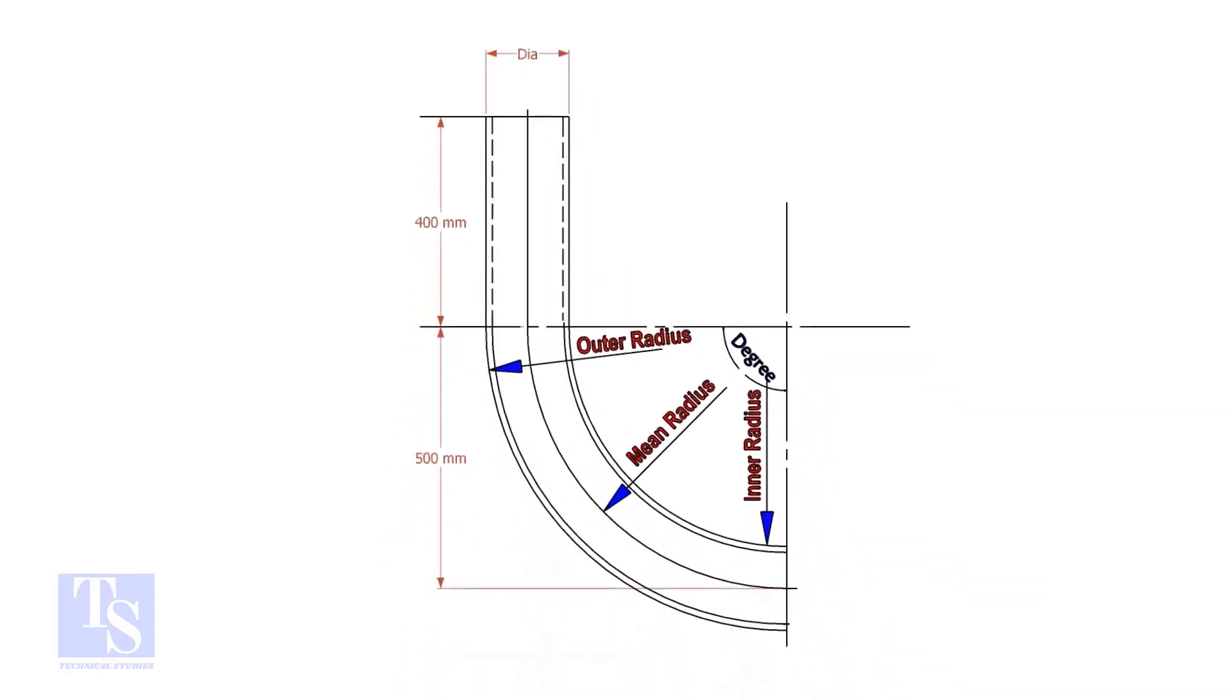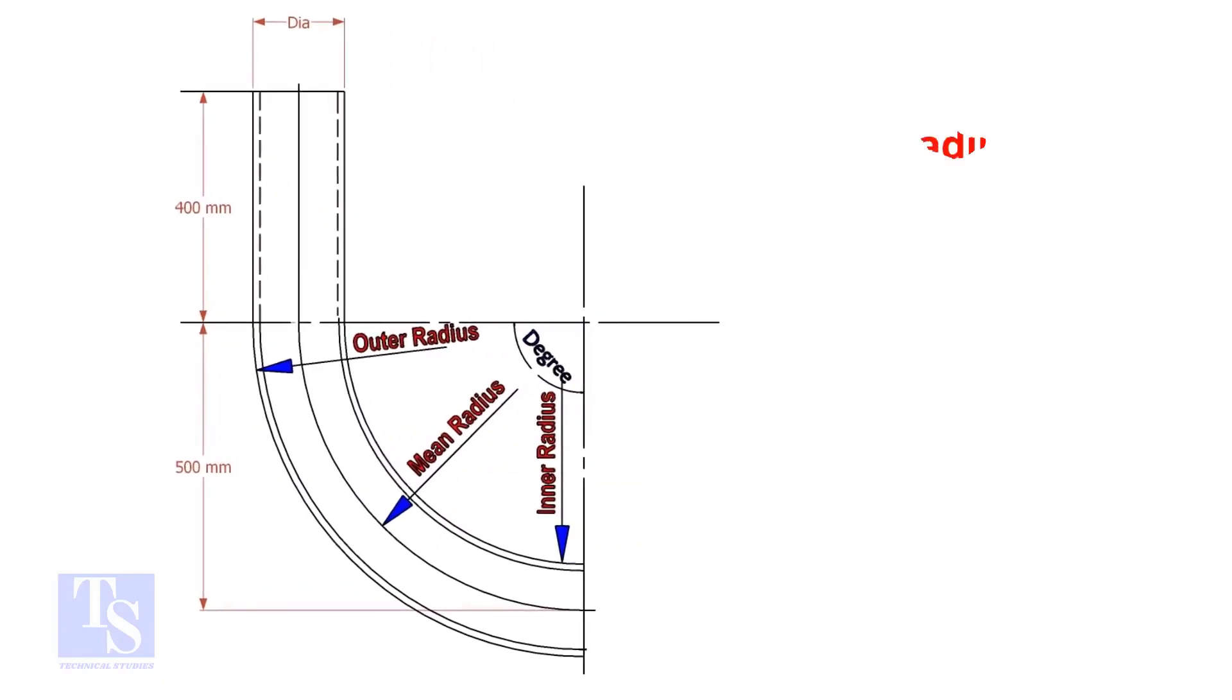In a drawing, usually the mean radius or the center radius is given. Suppose the outer radius is given. Subtract the half diameter from the outer radius to get the center radius.